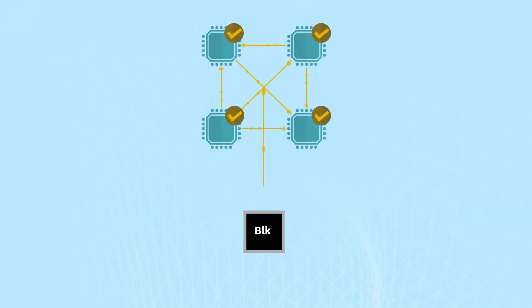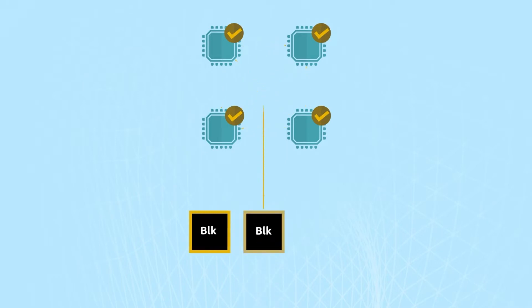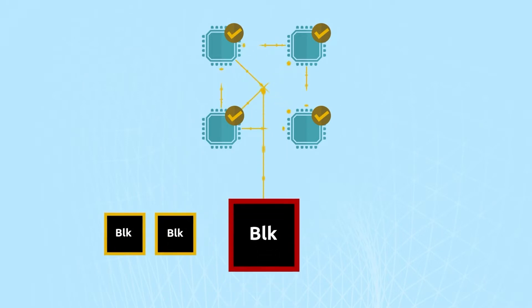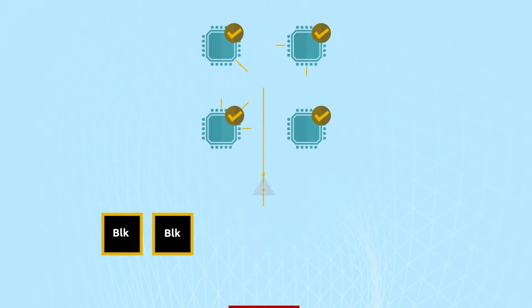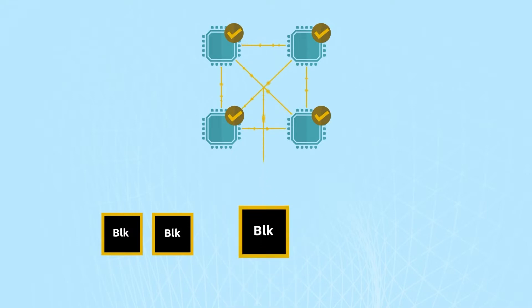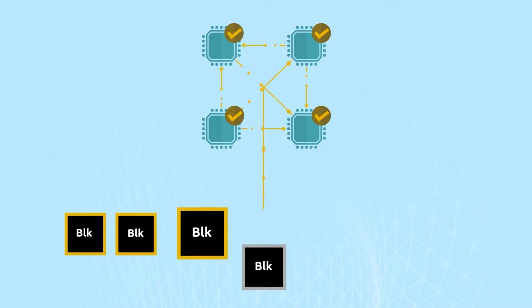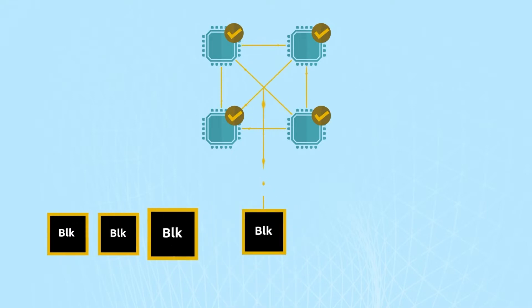Bitcoin SV has only one block size consensus rule. In this animation, we can see nodes rejecting blocks that exceed the block size consensus rule. This block size consensus rule is an economic limit imposed by nodes around whether they will accept a block.